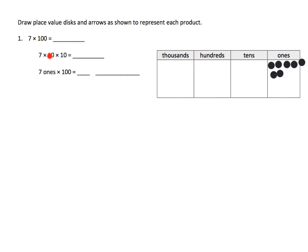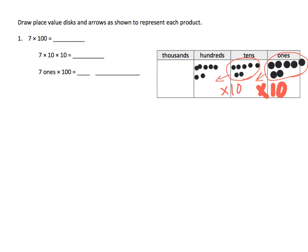Because a hundred can be thought of as ten times ten, seven times ten means these disks move over to the next column, and we get seven in the tens column. That's times by ten. Then we're going to take those and multiply by ten again, which moves them one more column over, and we end up with seven in the hundreds column.